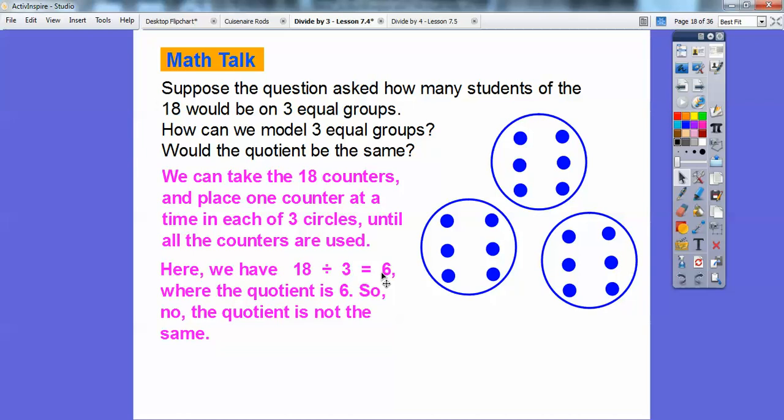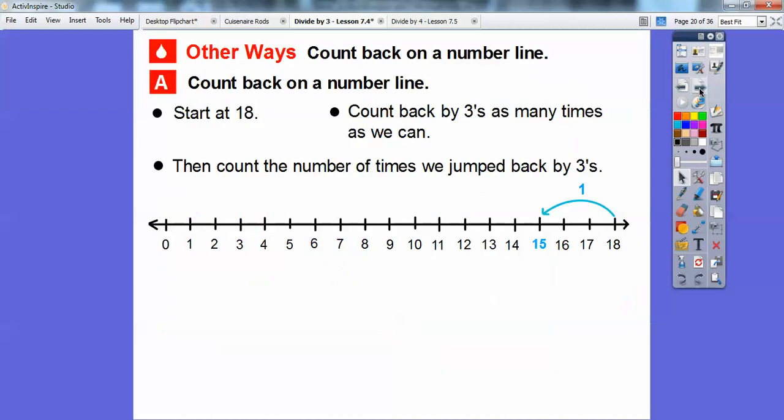So to answer the question, the quotient is not the same as in the previous problem because in the previous problem, it was 18 divided by 6 equals 3. Here 18 divided by 3 equals 6. So just remember that 18 is the dividend, 3 is the divisor, and 6 is the quotient. So when they're asking those questions, you can know which numbers they're talking about.